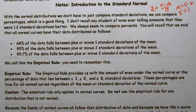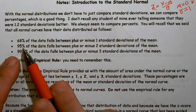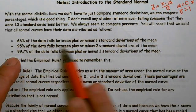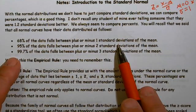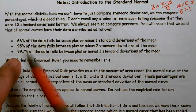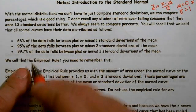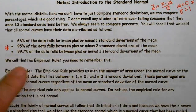One of the great things about the normal curve is that once we convert it to the standard normal, it follows the empirical rule: 68% of the data falls between plus or minus one standard deviation, 95% falls within plus or minus two, and 99.7% falls within plus or minus three. You need to memorize this.